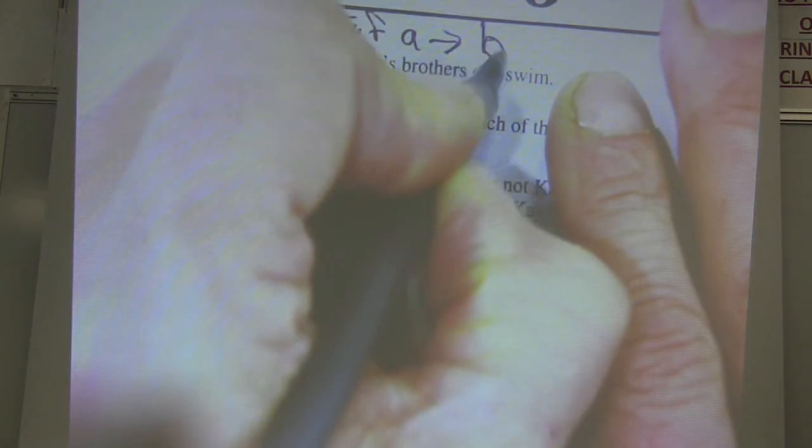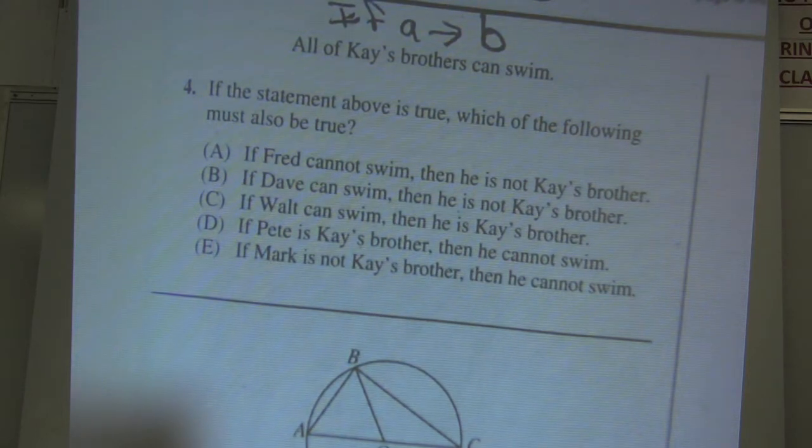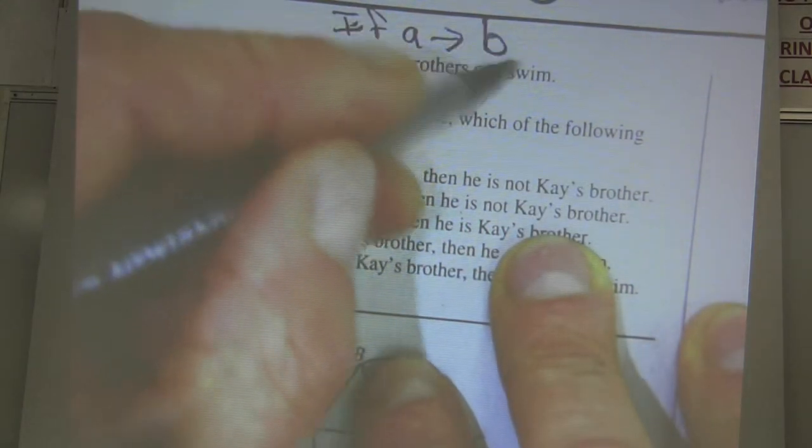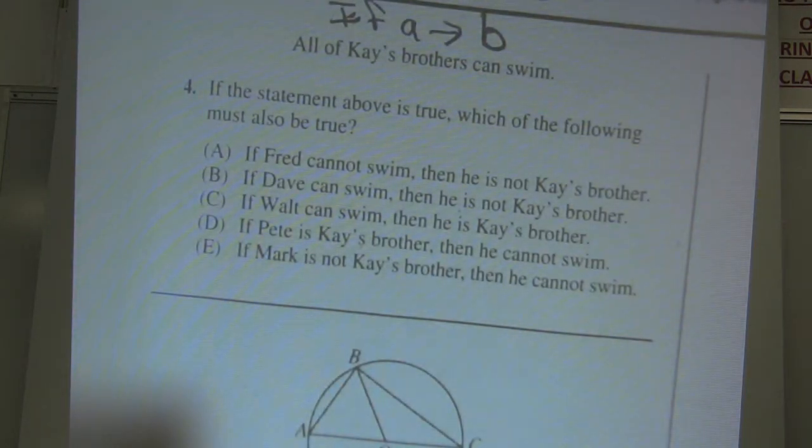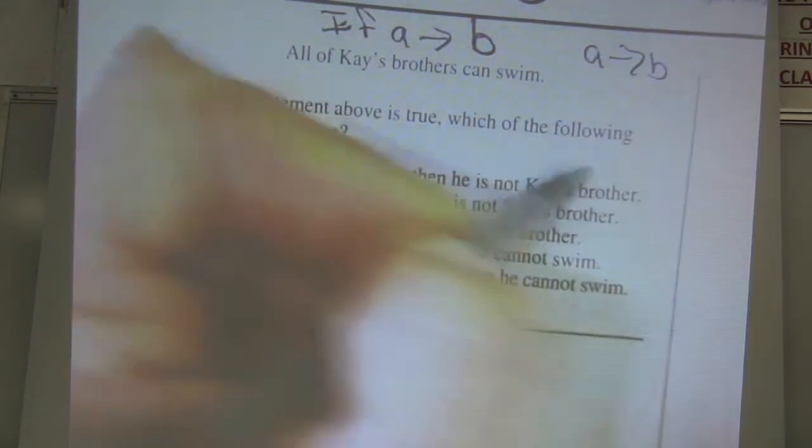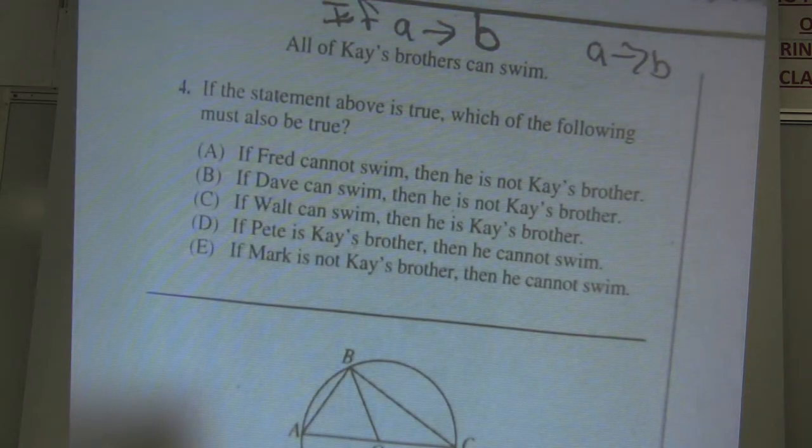This is how I teach conditional statements in geometry, and it makes this problem a lot easier. So the if A would be, if it's K's brothers, and then the B would be, then that person can swim. The only way I can get a logical statement that comes out of this, if it starts off with if A, then B again, so like if John was K's brother, then John can swim.